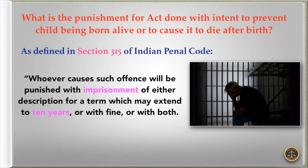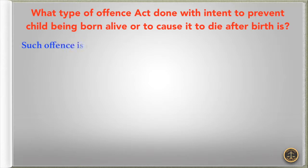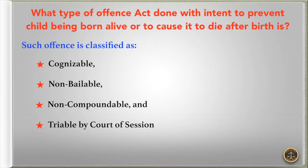Last but not the least, what type of offence is act done with intent to prevent child being born alive or to cause it to die after birth? It is classified as cognizable, non-bailable, non-compoundable, and triable by Court of Session.